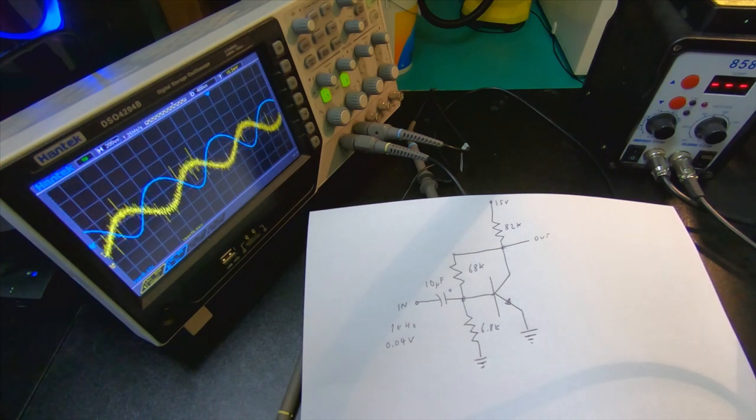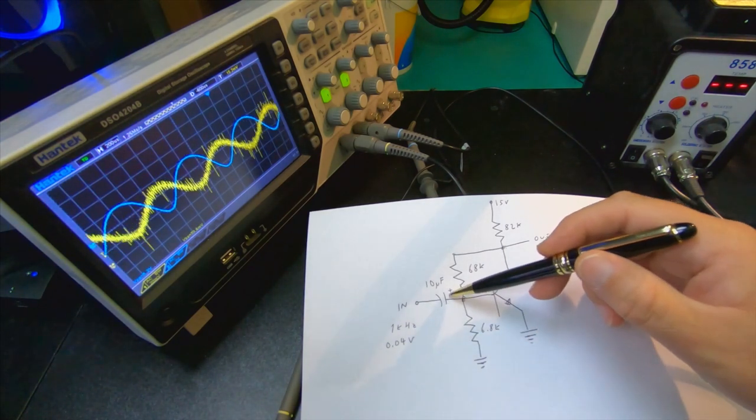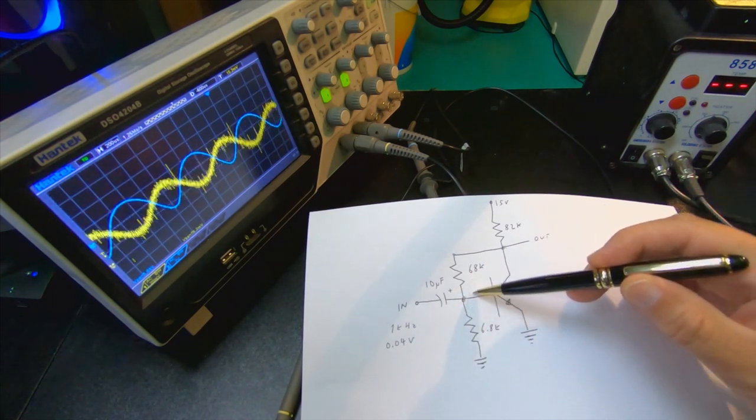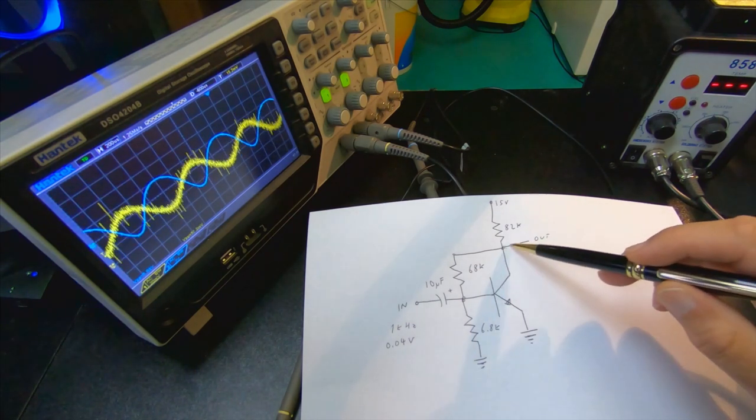So what we've done now is that we've introduced the DC feedback, so you have the input signal here, the DC is blocked there, so it can actually vary this signal here, and here you have a feedback from the output.